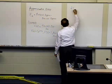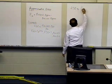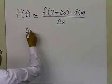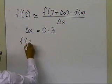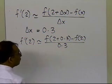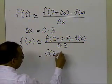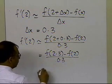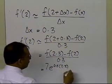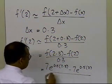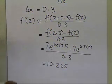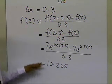To calculate f prime of 2, it is approximately equal to the value of the function at 2 plus delta x, minus the value of the function at x, divided by delta x. Since in this first case delta x equals 0.3, f prime of 2 is approximately f at 2.3 minus f of 2, divided by 0.3. Substituting the function values, we get 7 e to the power 0.5 times 2.3, minus 7 e to the power 0.5 times 2, divided by 0.3. This number turns out to be 10.265 — the value of the derivative at x equals 2 using a step size of 0.3.